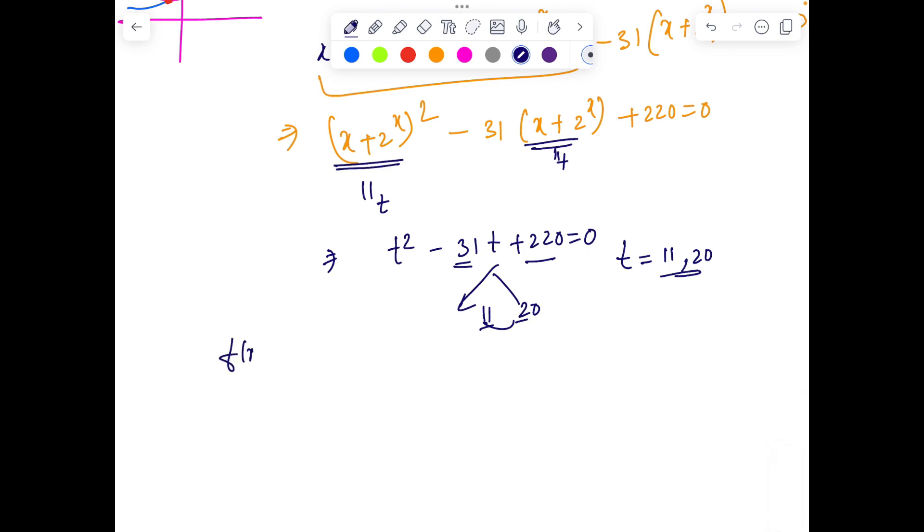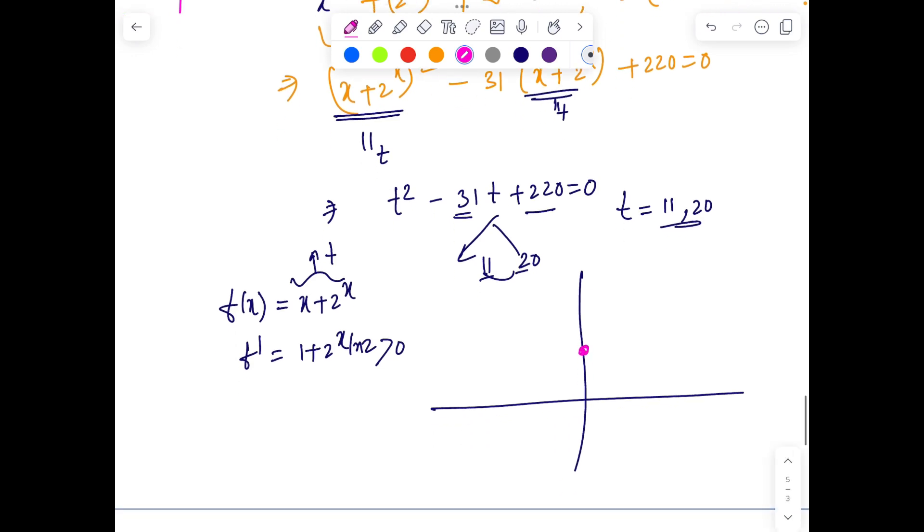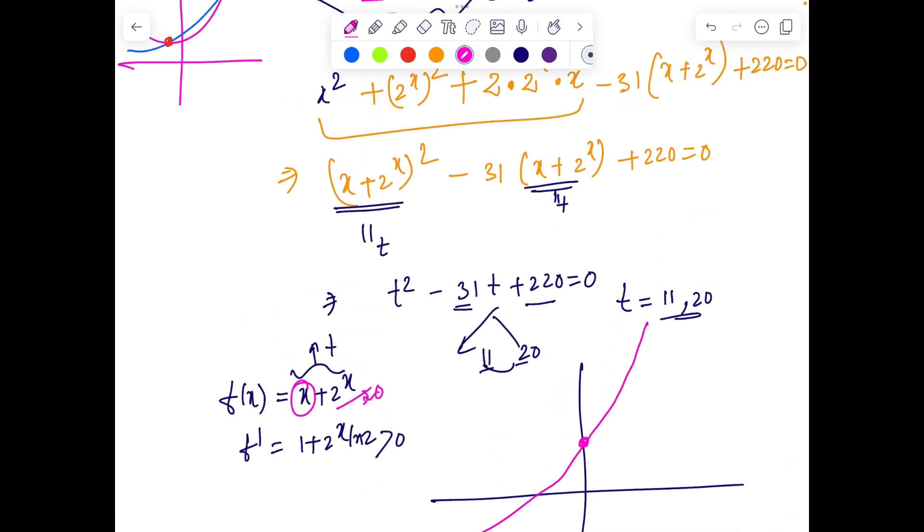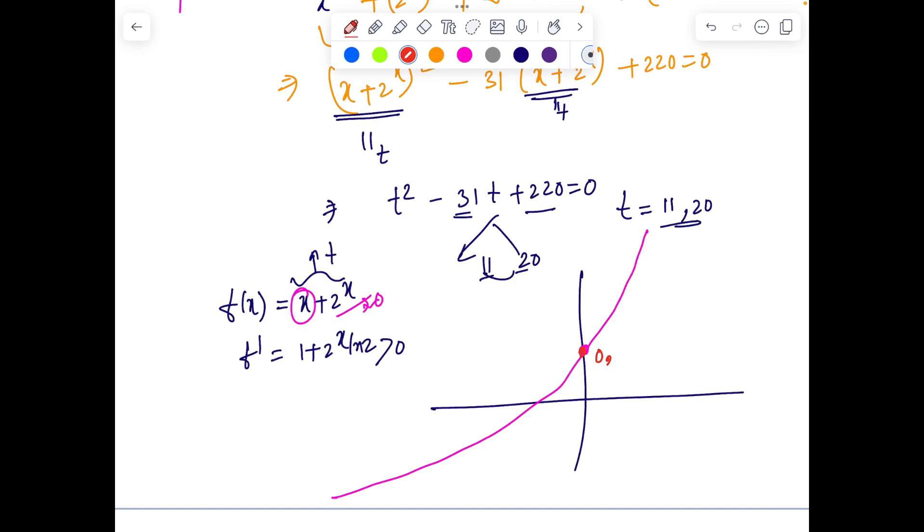But how to find X? Now we can assume since F of X equals X plus 2 to the power X. This notation is T. So F dash is going to be 1 plus 2 raised to power X ln 2, which is always positive. So X plus 2 to the power X itself is a strictly increasing function. What I mean? At X equals 0, we'll get 1. At minus infinity is going to be minus infinity because this will be almost in ICU. And at infinity, it will go to infinity.